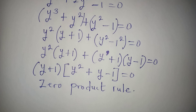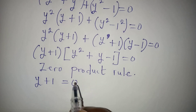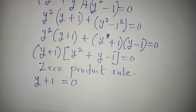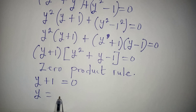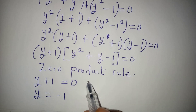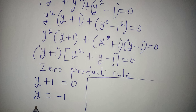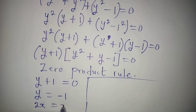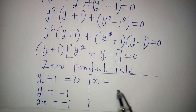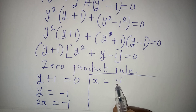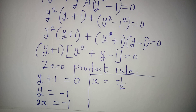Applying the zero product rule, either y plus 1 equals 0, or the quadratic y² plus y minus 1 equals 0. From the first factor, y equals minus 1. Since y equals 2x, we have 2x equals minus 1, so dividing both sides by 2 gives x equals minus one half. This is our first value of x.